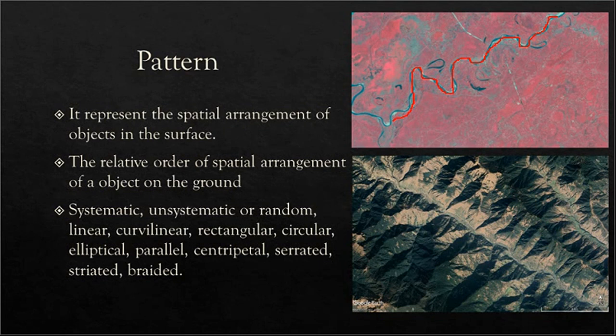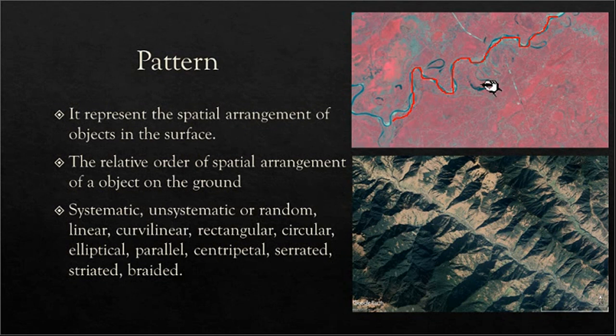There are other patterns such as elliptical, parallel, centripetal, serrated, straightened, and braided. Here you can see there is also a distinct pattern of meandering along with some oxbow, so we are sure that this is basically representing a river.